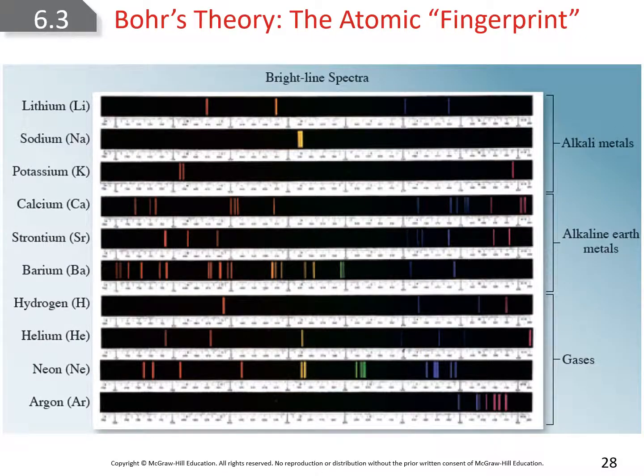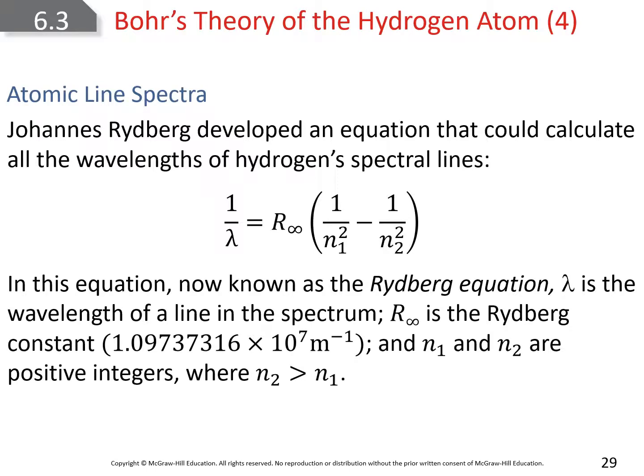Bohr came up with the idea that each element has its own individual color spectra. We refer to this unofficially as the atomic fingerprint. No other element on the periodic table throws off colors in the same way. They all have their own atomic fingerprint, their own color line spectrum. Based on what colors are emitted, you can see the wavelength of each one.